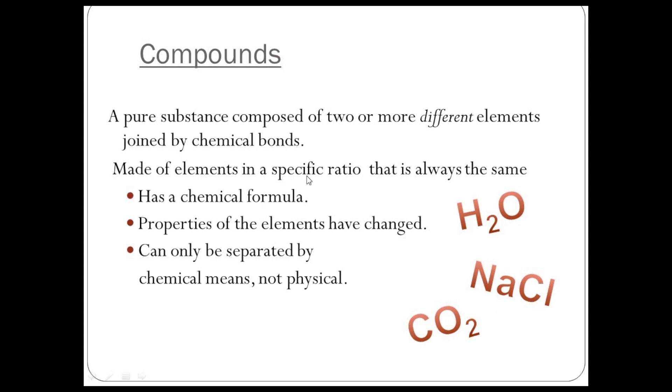Made of elements in a specific ratio. What that means is water is always H2O. It wouldn't be H3O2—it would always be that ratio of atoms: two atoms of hydrogen, one oxygen. Properties of the elements have changed. If we go for water, for example, water contains hydrogen, which is a gas, and oxygen, which is a gas. But when they join together chemically, they make the liquid water. And they can only be separated by chemical means, not physical.